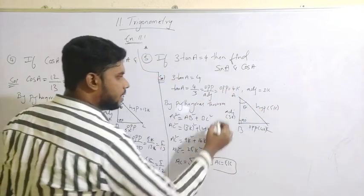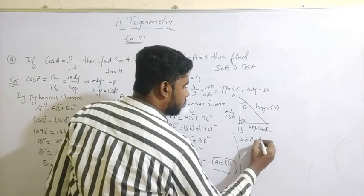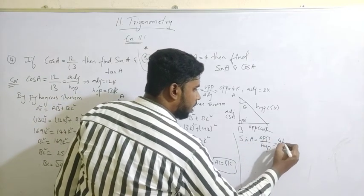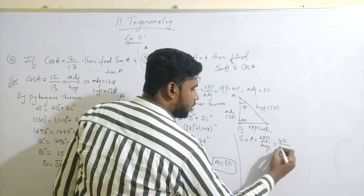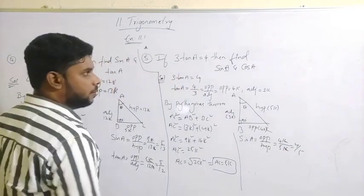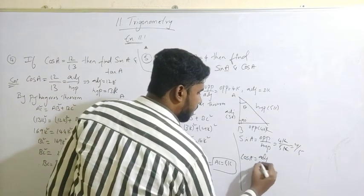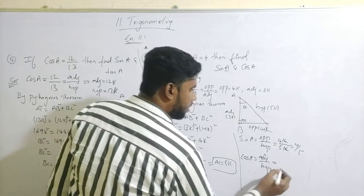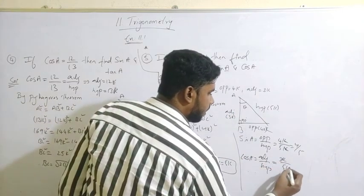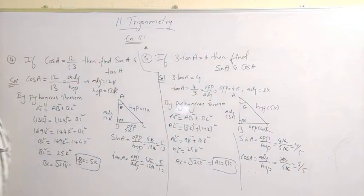Now we can easily find sin A and cos A. Sin A equals opposite by hypotenuse: opposite is 4K and hypotenuse is 5K. K cancels, so sin A equals 4 by 5. Similarly, cos A equals adjacent by hypotenuse: adjacent is 3K and hypotenuse is 5K. K cancels, giving cos A equals 3 by 5.